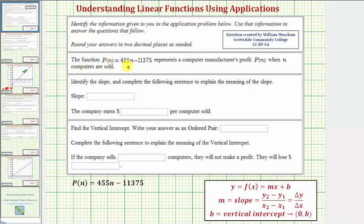We're given the function p of n equals 455n minus 11,375, which represents a computer manufacturer's profit, p of n, when n computers are sold.